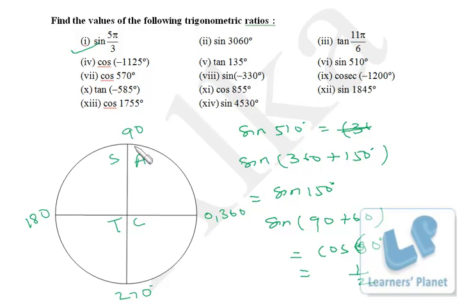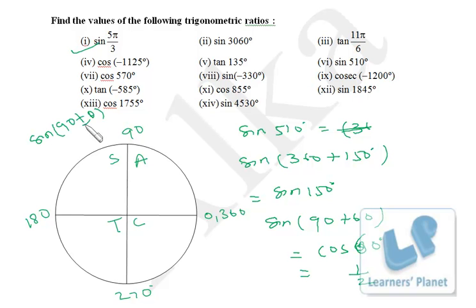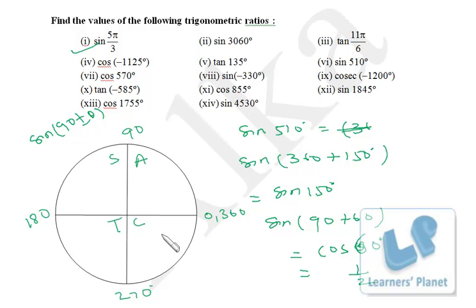Whenever you add or subtract something from 90 or 270 — that is, 90 ± θ or 270 ± θ — then sine converts to cos, cos converts to sine, tan converts to cot, cot converts to tan, sec converts to cosec, and cosec converts to sec. Mutual conversion takes place. To decide whether the result is positive or negative, use the quadrant circle.